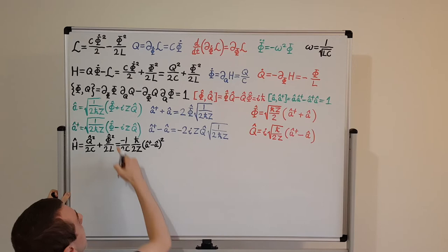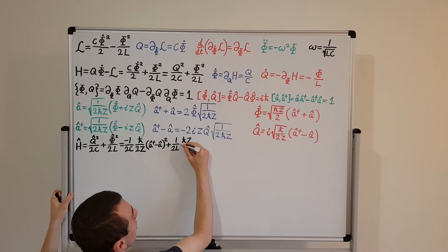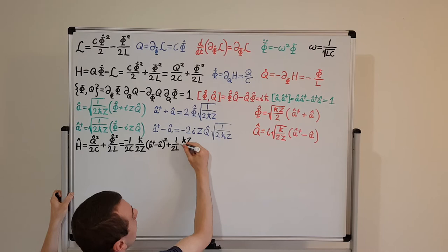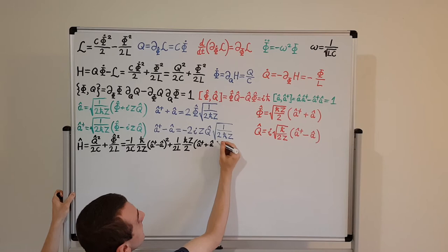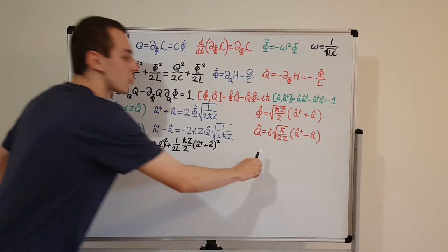For the phi-hat squared term: we have plus 1 on 2L. Squaring removes the square root, leaving h-bar Z over 2, and then we have the sum (a dagger plus a) squared. The minus sign in the Q term comes from i squared equals minus 1.